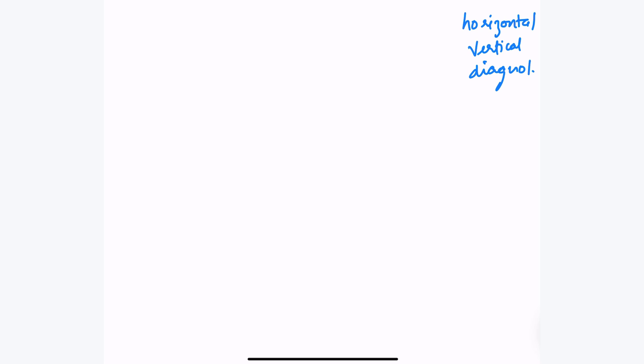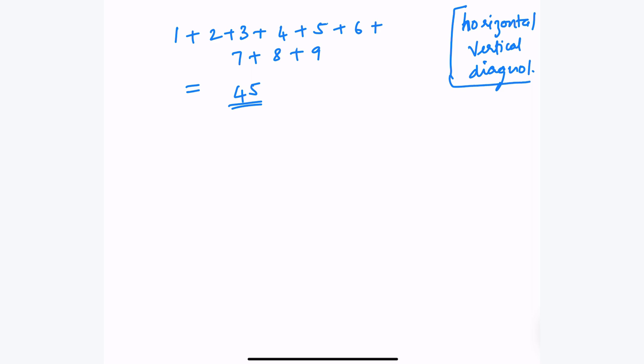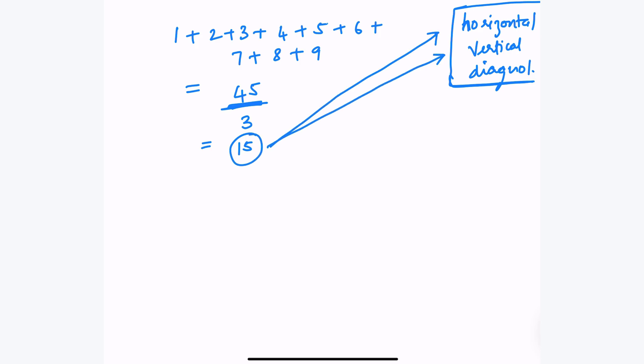Let's switch to the whiteboard and talk about how we can solve this efficiently. The first question is: how do we determine what the total for horizontal, vertical, and diagonal should be? If we add all numbers from 1 to 9, the total is 45. Dividing 45 by 3 gives 15. So each line — horizontal, vertical, and diagonal — should sum to 15.